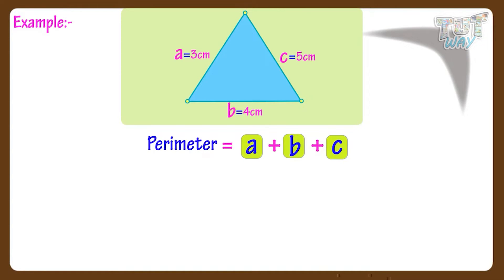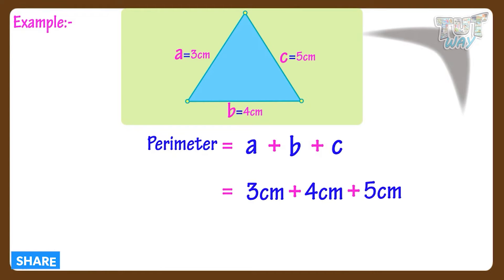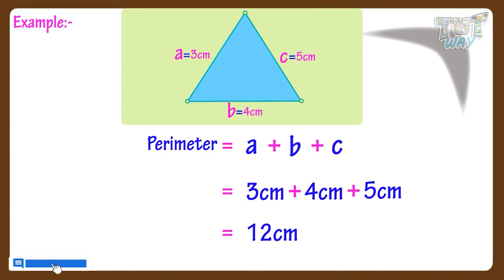And here the lengths of sides of the triangle are 3, 4 and 5. So perimeter equals 3 plus 4 plus 5, which equals 12. So the perimeter equals 12 centimeters.